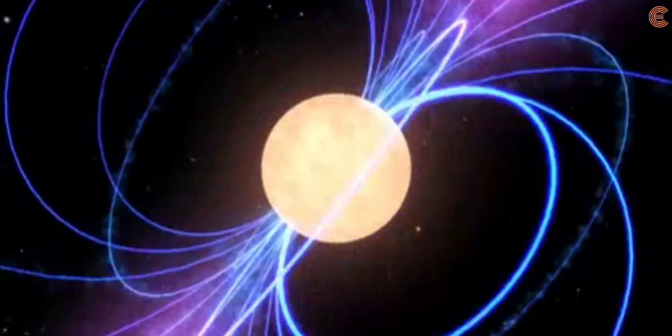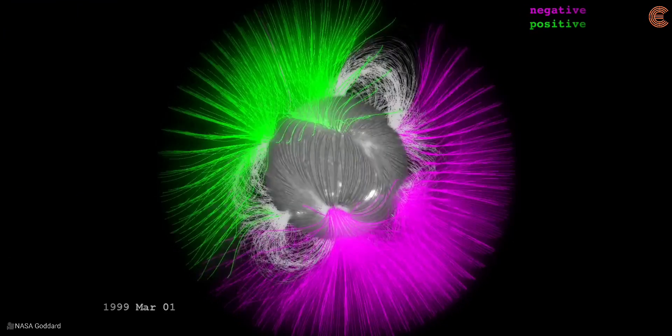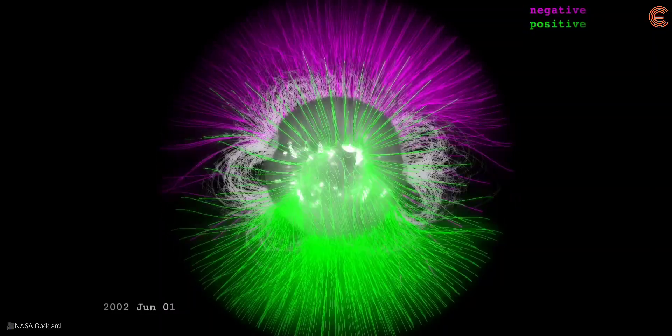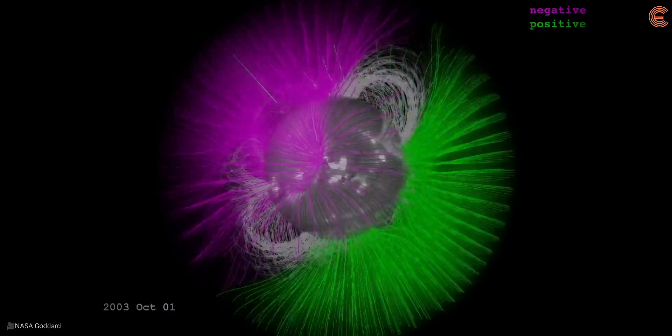This effect is common among stars. Our sun reverses its magnetic field every 11 years, which drives the 11-year cycle of sunspots astronomers have observed since the 1600s.